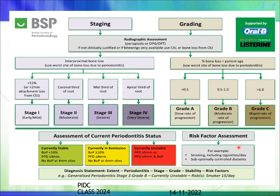Also note any risk factors present, such as smoking — including number of cigarettes per day — and diabetes control. When giving a diagnosis statement, record it in this order: the extent (generalized or localized periodontitis), the disease type, the stage, the grade, the current stability, and the risk factors. For example: Generalized Periodontitis, Stage 3, Grade B, currently unstable, risk factor — smokes 15 cigarettes per day.